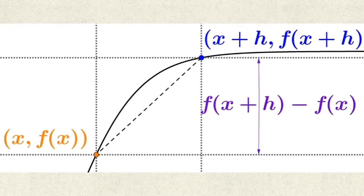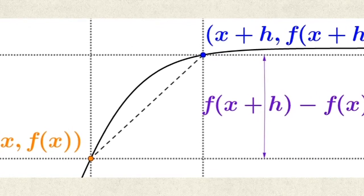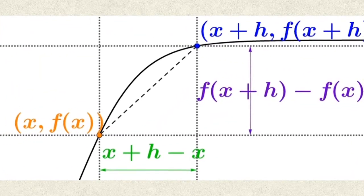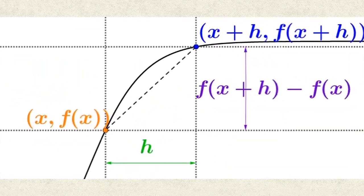If we calculate the vertical change in distance, we would have f(x+h) minus f(x). And if we calculate the horizontal change in distance, we'd have x+h minus x, or just h.